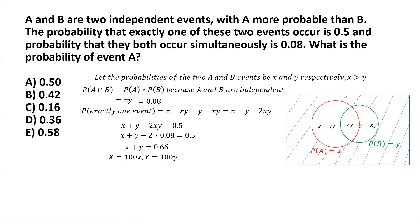To avoid dealing with fractions, let's represent capital X as 100 times small x and capital Y as 100 times small y. Then the sum of capital X and capital Y is 66, and the product of capital X and capital Y is 800. So we have the two equations: X + Y = 66 and X·Y = 800.